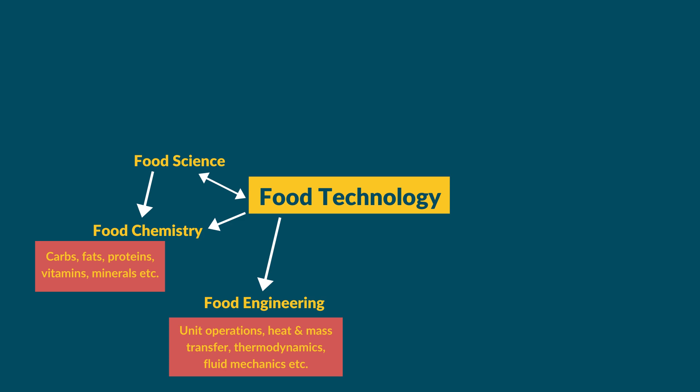Food engineering involves a lot of numerical and mathematical problems. Many students ask whether they should take B.Tech food technology if they are weak in maths. I think don't let mathematics or numerical problems stop you from choosing this interesting branch. Food technology includes biology, chemistry, physics, and food engineering, but if you are really determined and interested in food technology, you will get through food engineering. I am not an expert in mathematics, but I was still able to work through the food engineering concepts.